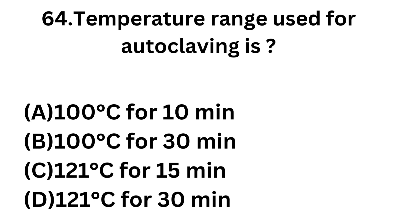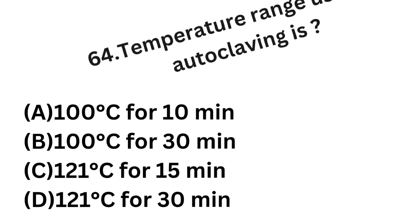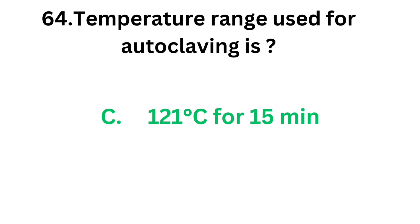Question number 64: Temperature range used for autoclaving is — Option A: 100°C for 10 minutes. Option B: 100°C for 30 minutes. Option C: 121°C for 15 minutes. Option D: 121°C for 30 minutes. The correct answer is option C, 121°C for 15 minutes. Temperature range for autoclaving is 121°C for 15 minutes.